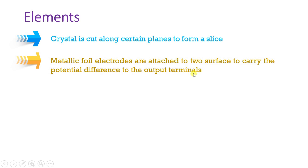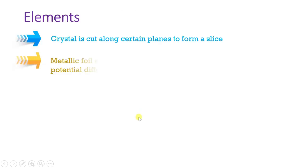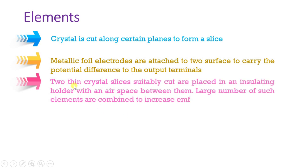The metallic foil electrodes take the electrical output based on pressure. Two thin crystal slices, suitably cut, are placed in an insulating holder with an air space between them. A large number of elements can be combined to increase the EMF — one can have multiple slices to increase EMF.